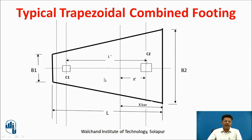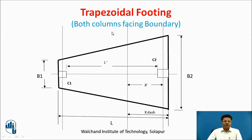Now let us see a typical Trapezoidal Combined Footing. The footing has a trapezoidal shape with smaller side B1 and longer side B2. Length of the footing is L. This is column C1 and this is column C2. The distance between centers of columns is called L dash. The centroid of the trapezoidal combined footing is at distance x dash from C2 and at distance x bar from side B2. This is a special type of trapezoidal footing with both columns facing the boundary. The resultant of two forces carried by columns C1 and C2 will ultimately drop at the centroid.